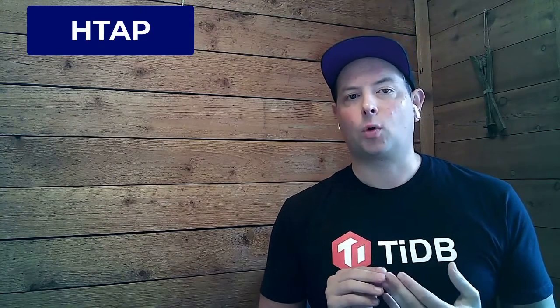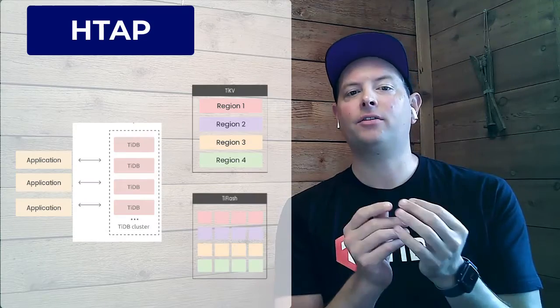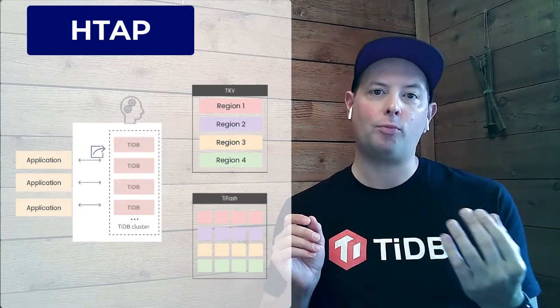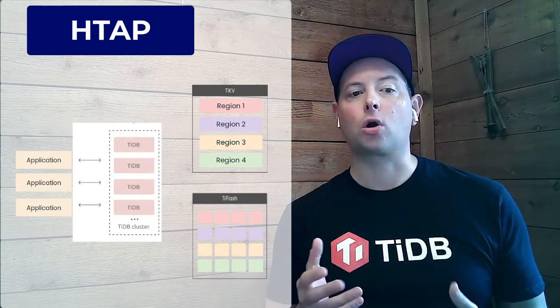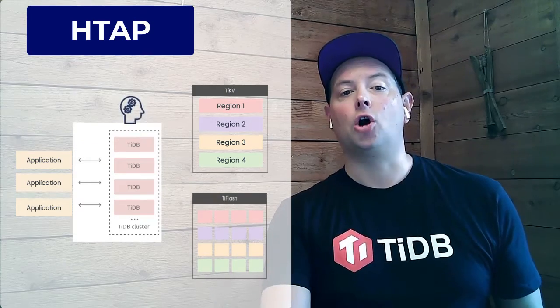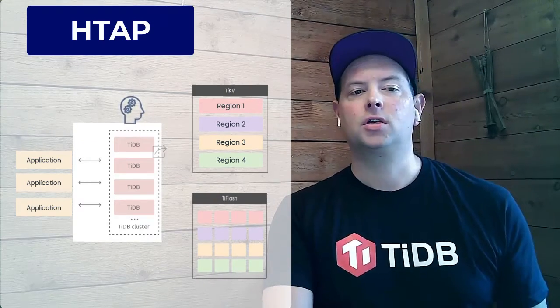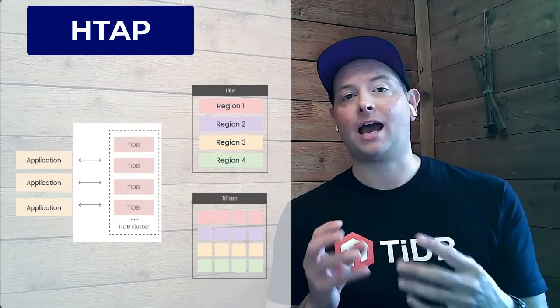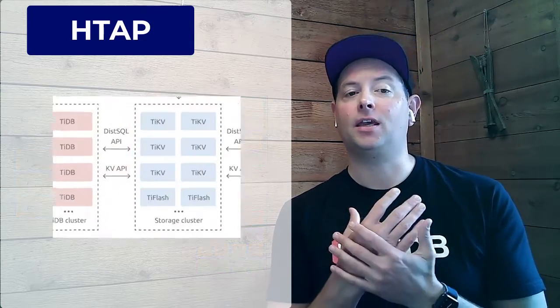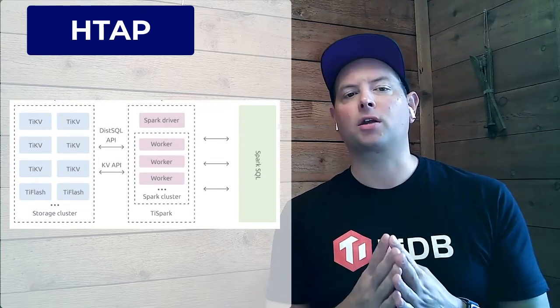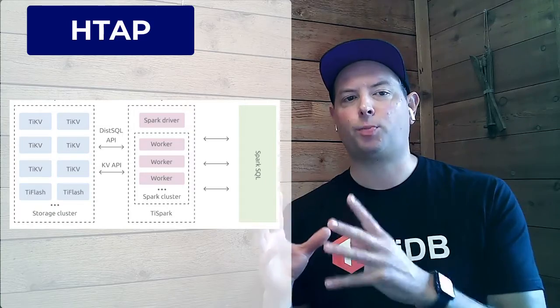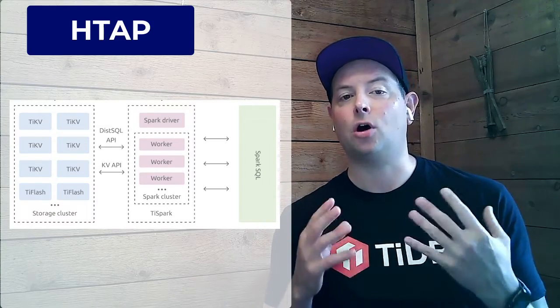So HTAP, or hybrid transactional and analytical processing. The optimizer in the stateless TyDB server can intelligently choose whether to fetch data from the row-based TyKV nodes for traditional OLTP transaction processing workloads, or from the column-based TyFlash nodes for OLAP analytical workloads. Complex joins can be pushed down to the TyFlash cluster to take advantage of its MPP, or massively parallel processing, capabilities. Additionally, the TySpark component enables running Apache Spark on top of TyDB to answer complex OLAP queries.